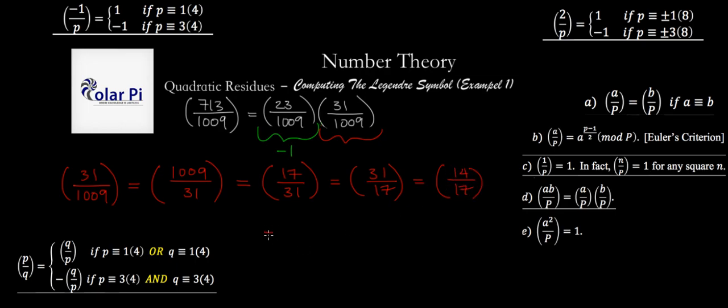Now, 14 over 17, we can write as 2 over 17 and then times 7 over 17. Now, from the video where we worked on 2 over P, we know that 2 is a quadratic residue mod 17. We know that because we said 6 squared, which is equal to 36, is congruent to 2 mod 17. Therefore, this is going to be 1, because 2 is a quadratic residue mod 17. So we've got 1 times 7 over 17. So just 7 over 17.